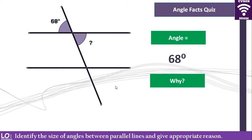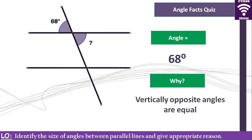The angle marked with a question mark is 68 degrees. Why is it 68 degrees? Out of the reasons we have talked about, it is because they are vertically opposite. Vertically opposite angles are equal, so this angle and the one vertically opposite will also be the same.